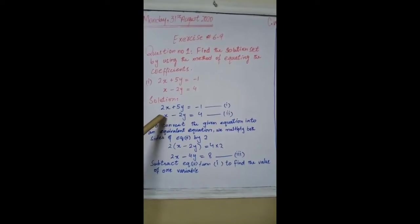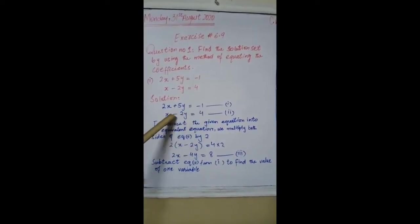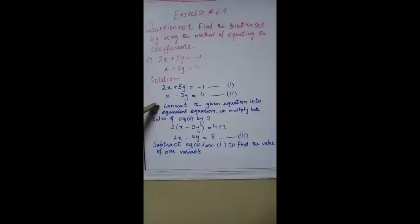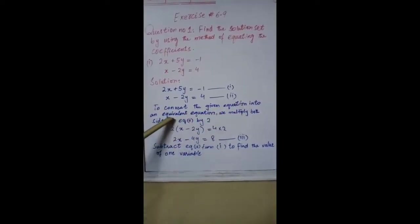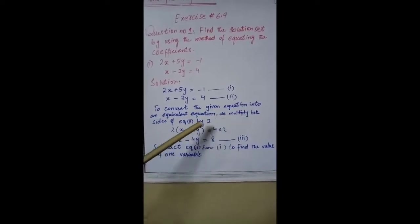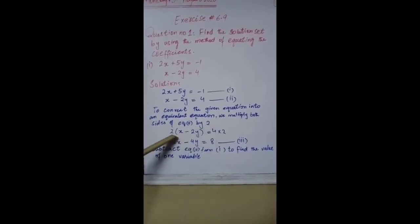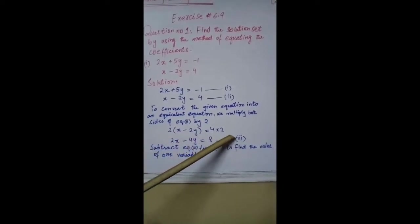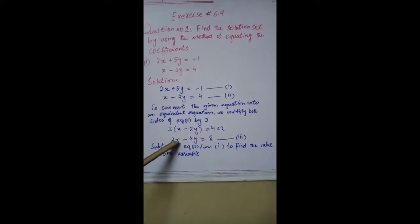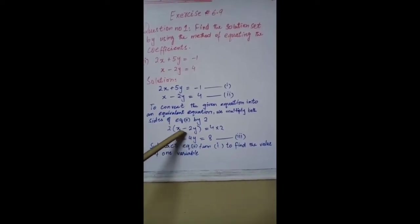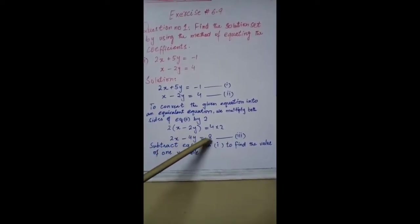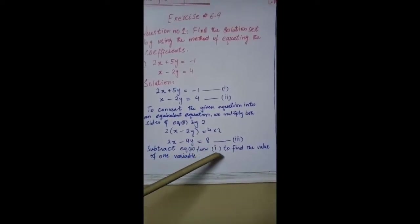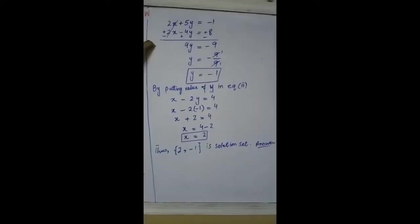2x + 5y = -1 is our first equation, and x - 2y = 4 is our second equation. To convert the given equation into an equivalent equation, we multiply both sides of equation 2 by 2: 2(x - 2y) = 4 × 2, giving 2x - 4y = 8, which is our third equation.